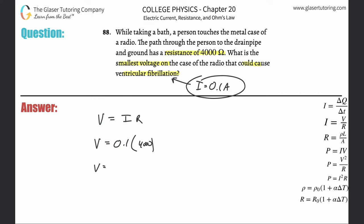So let's do it. 0.1 times 4,000 is going to be 400 volts. That's the smallest voltage.